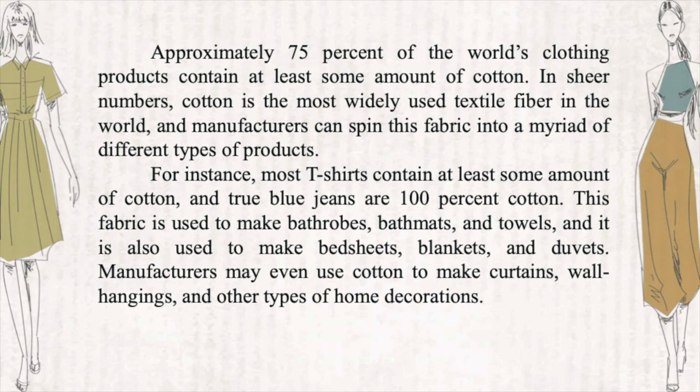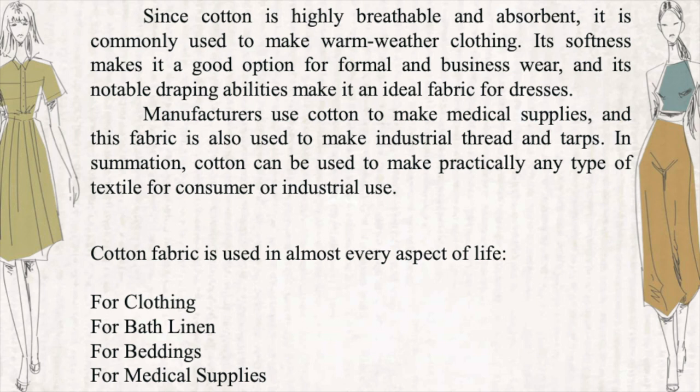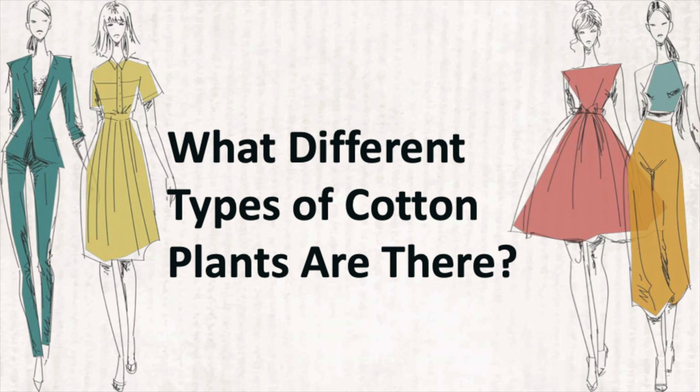Since cotton is highly breathable and absorbent, it is commonly used to make warm weather clothing. Its softness makes it a good option for formal and business wear, and its notable draping abilities make it an ideal fabric for dresses. Manufacturers use cotton to make medical supplies, and this fabric is also used to make industrial thread and tarps. In summation, cotton can be used to make practically any type of textile for consumers or industrial use, appearing in almost every aspect of life — clothing, bath linen, bedding, and medical supplies.